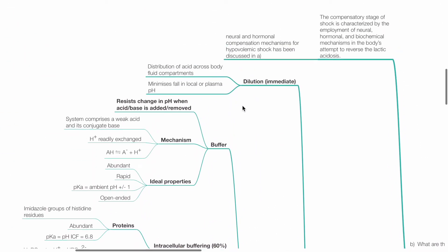Dilution is immediate. Distribution of acid across body fluid compartments minimizes fall in local or plasma pH.